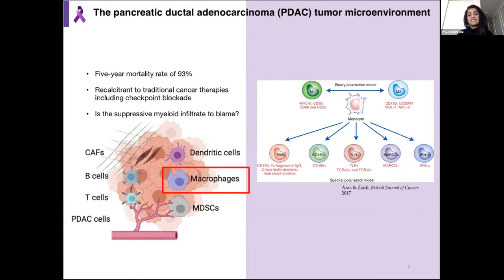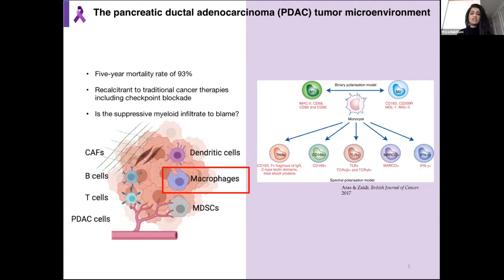Macrophages are a highly plastic cell type; they respond very easily to signals in their environment. In the past, we understood macrophages using in vitro systems and acute models like infection and injury, in a binary polarization fashion: either M1 macrophages, which express effectors that promote immune responses like T-cell activation, or M2 macrophages, which are suppressive and could block T-cell activation and promote wound healing. However, as we understand macrophages more deeply in the context of chronic diseases like cardiac hypertension, rheumatoid arthritis, and cancer, we understand that macrophages actually exist in a continuum between M1 and M2 phenotype.